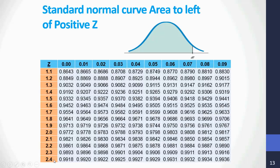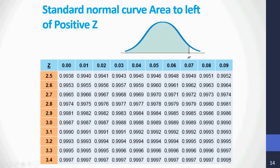What is the area to the left of 2.49? We pick up 2.4 vertically and 0.09 horizontally. At the intersection, we get 0.9936. The table continues all the way to 3.49. What is the area to the left of 3.28? We pick up 3.2 vertically and 0.08 horizontally. At the intersection, the area to the left of 3.28 is 0.9995.